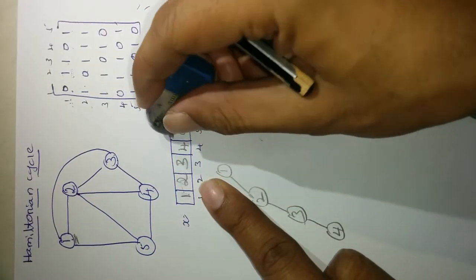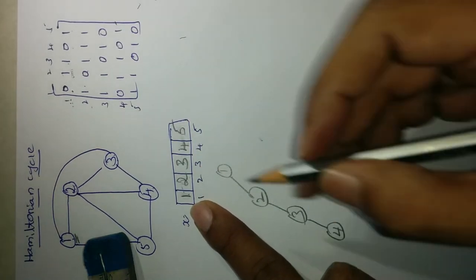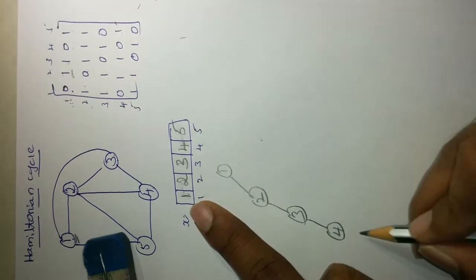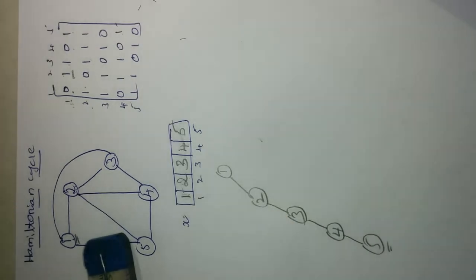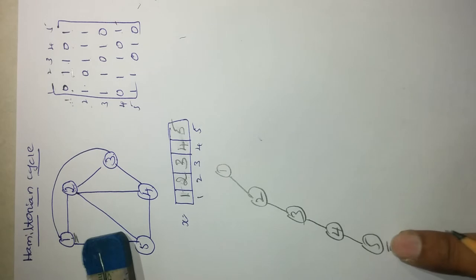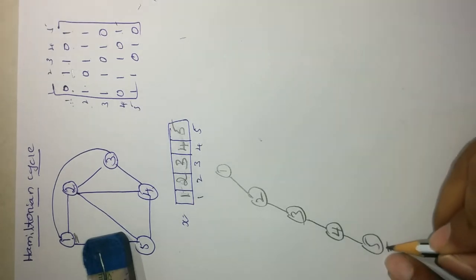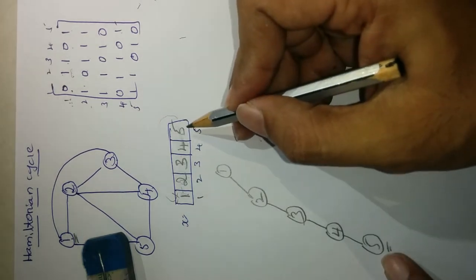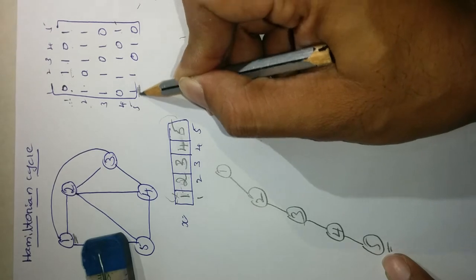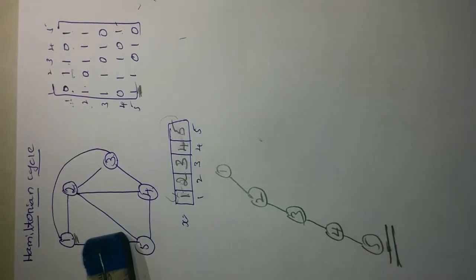For position 5, values 1, 2, 3, and 4 are already placed. Only 5 remains. Check edge 4 to 5: yes, it is there. Place 5 in position 5. Now we have the sequence 1, 2, 3, 4, 5. To verify this is a valid Hamilton cycle, after getting vertex 5 at the last position, check if there is an edge from 5 back to 1. Yes, there is an edge between 5 and 1, so this solution is 100% correct. This is the first solution.